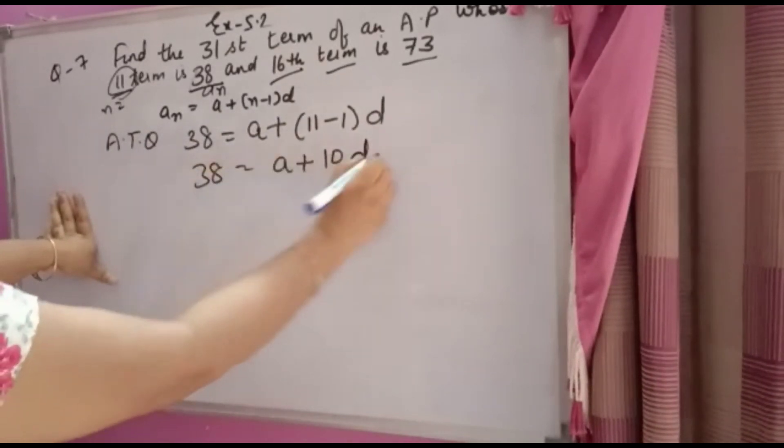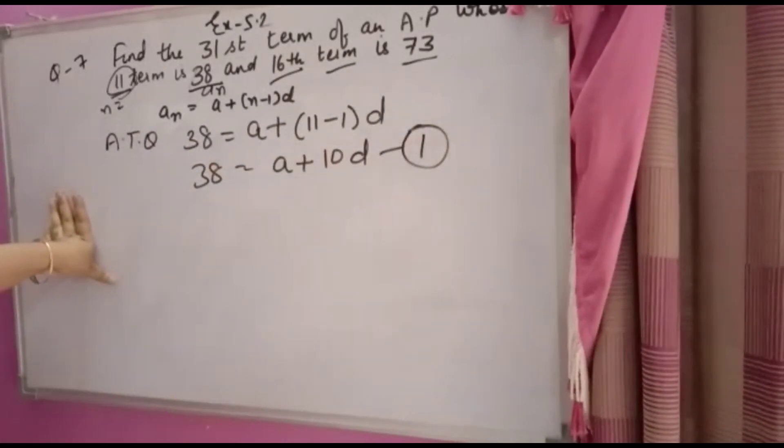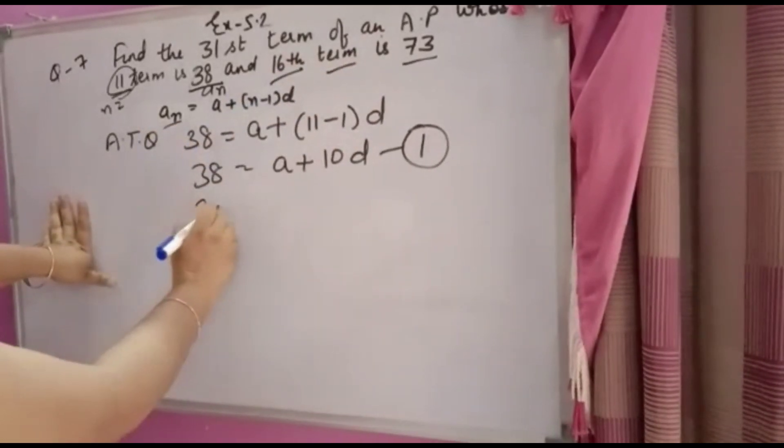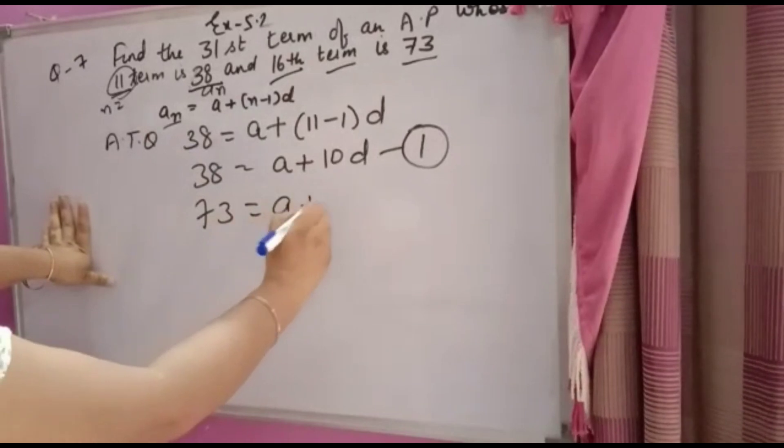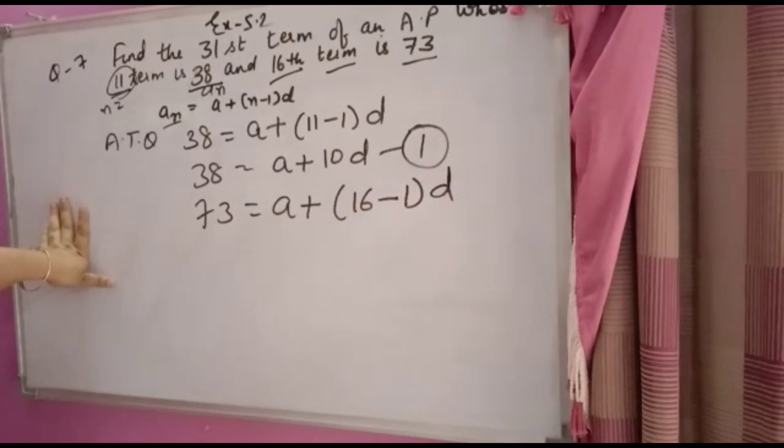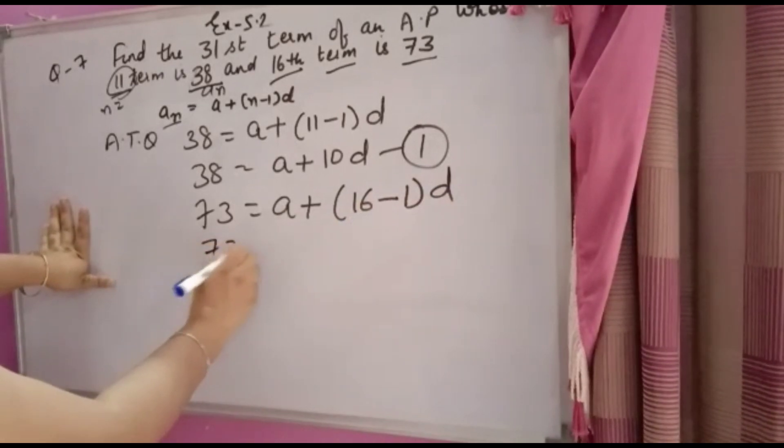This is equation 1. Now for the 16th term, AN = 73. Using the same formula with N = 16, we get 73 = A + (16-1)D, so 73 = A + 15D.